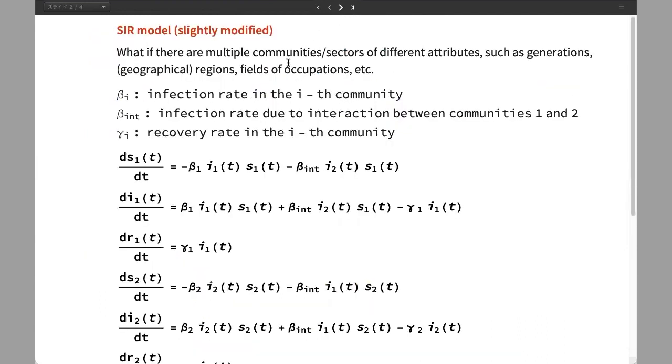Let's move to another example I have just made up. Because SIR model is so simple that there are loads of rooms for generalizations or applications. Here we consider what if there are multiple communities or sectors of different attributes such as generations, regions, et cetera.